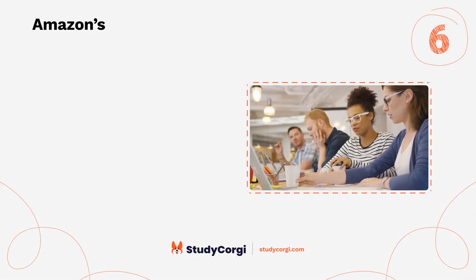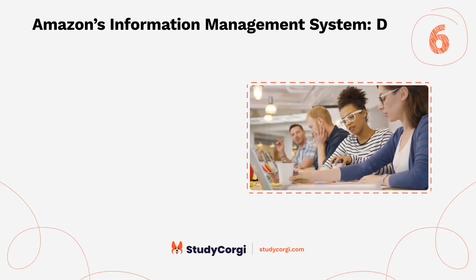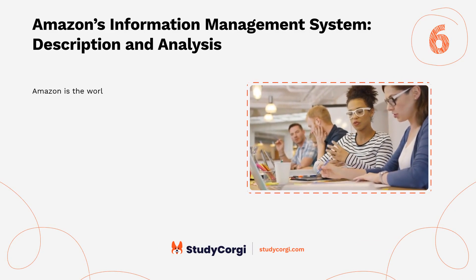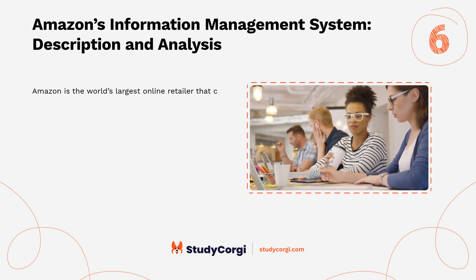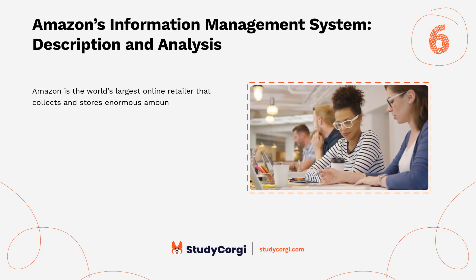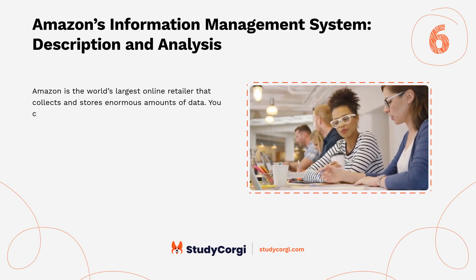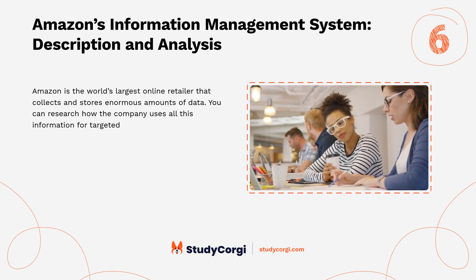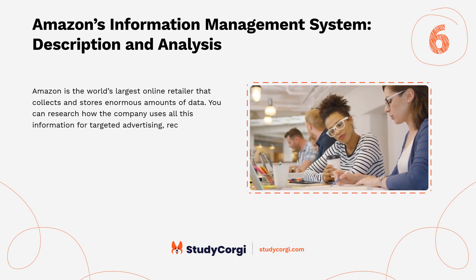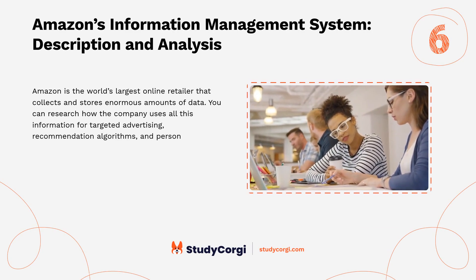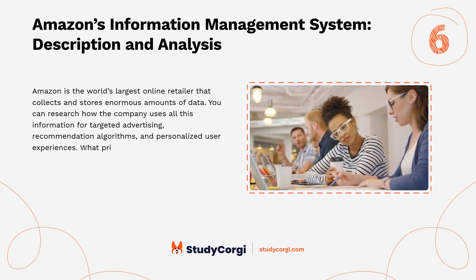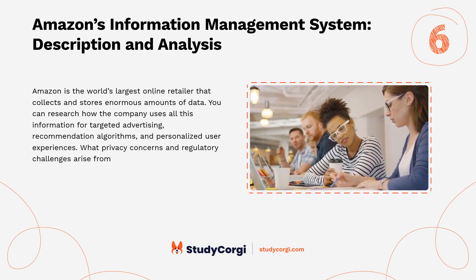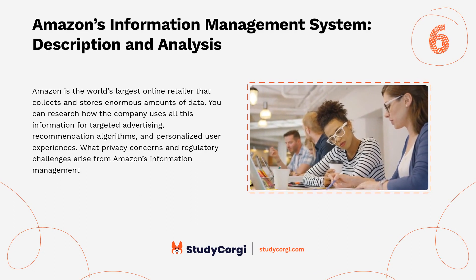Amazon's information management system — description and analysis: Amazon is the world's largest online retailer that collects and stores enormous amounts of data. You can research how the company uses all this information for targeted advertising, recommendation algorithms, and personalized user experiences. What privacy concerns and regulatory challenges arise from Amazon's information management practices?